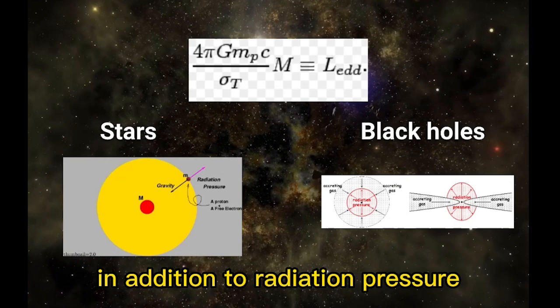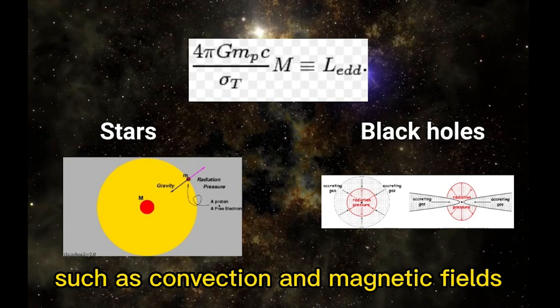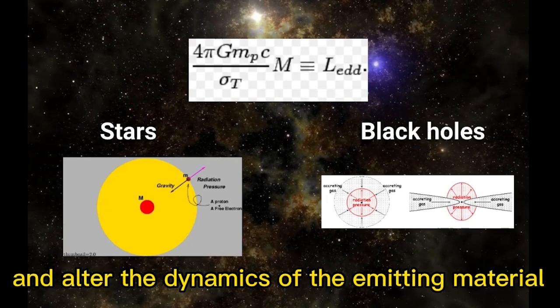In addition to radiation pressure, other factors can also limit the luminosity of a star, such as convection and magnetic fields. Magnetic fields can modify the radiation pressure and alter the dynamics of the emitting material. In some cases, the Eddington limit can be exceeded temporarily, leading to outbursts of radiation and increased accretion rates.